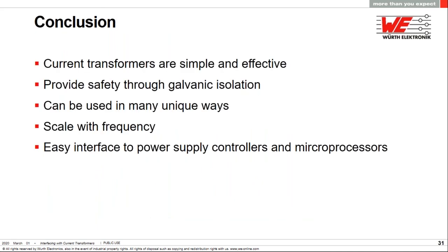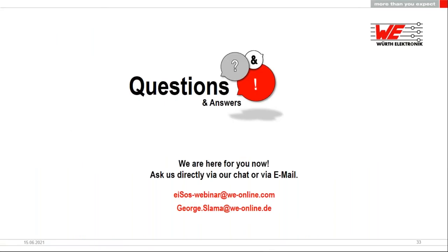So in conclusion, current transformers are simple and effective. They provide safety through galvanic isolation. They have very low dissipation when measuring high currents. They can be used in many unique ways, and they can be easily combined in circuits. They scale with frequency, so the higher the frequency, the smaller the part. They are very easy to interface to power supply controllers and microprocessors. And with that, thank you for your attention. And at this time, I could take any questions that you have. I'll give it back to Markus.